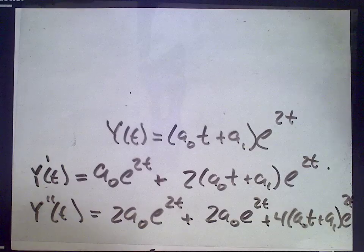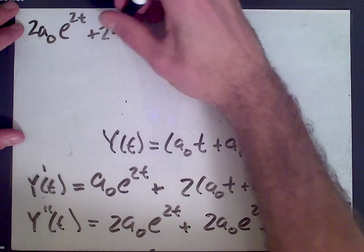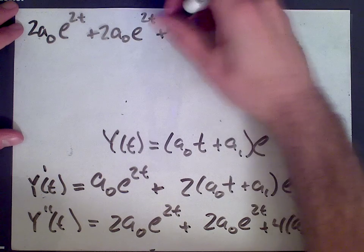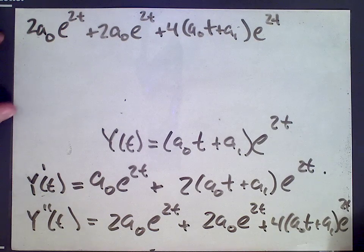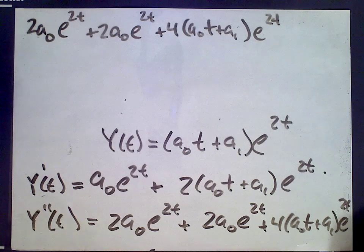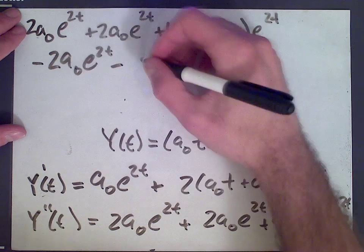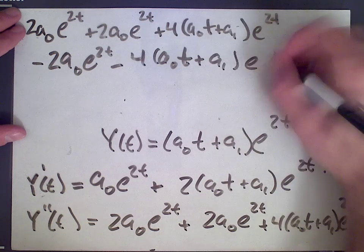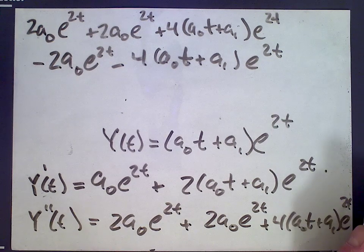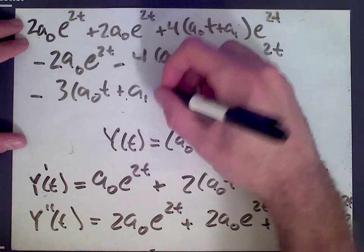Let's plug this into our equation. y double prime gives 2a0 e to the 2t plus 2a0 e to the 2t plus 4 times a0t plus a1 times e to the 2t. Then minus 2 times y prime gives minus 2a0 e to the 2t minus 4a0t plus a1 times e to the 2t. And then minus 3 times y gives minus 3 times a0t plus a1 e to the 2t.